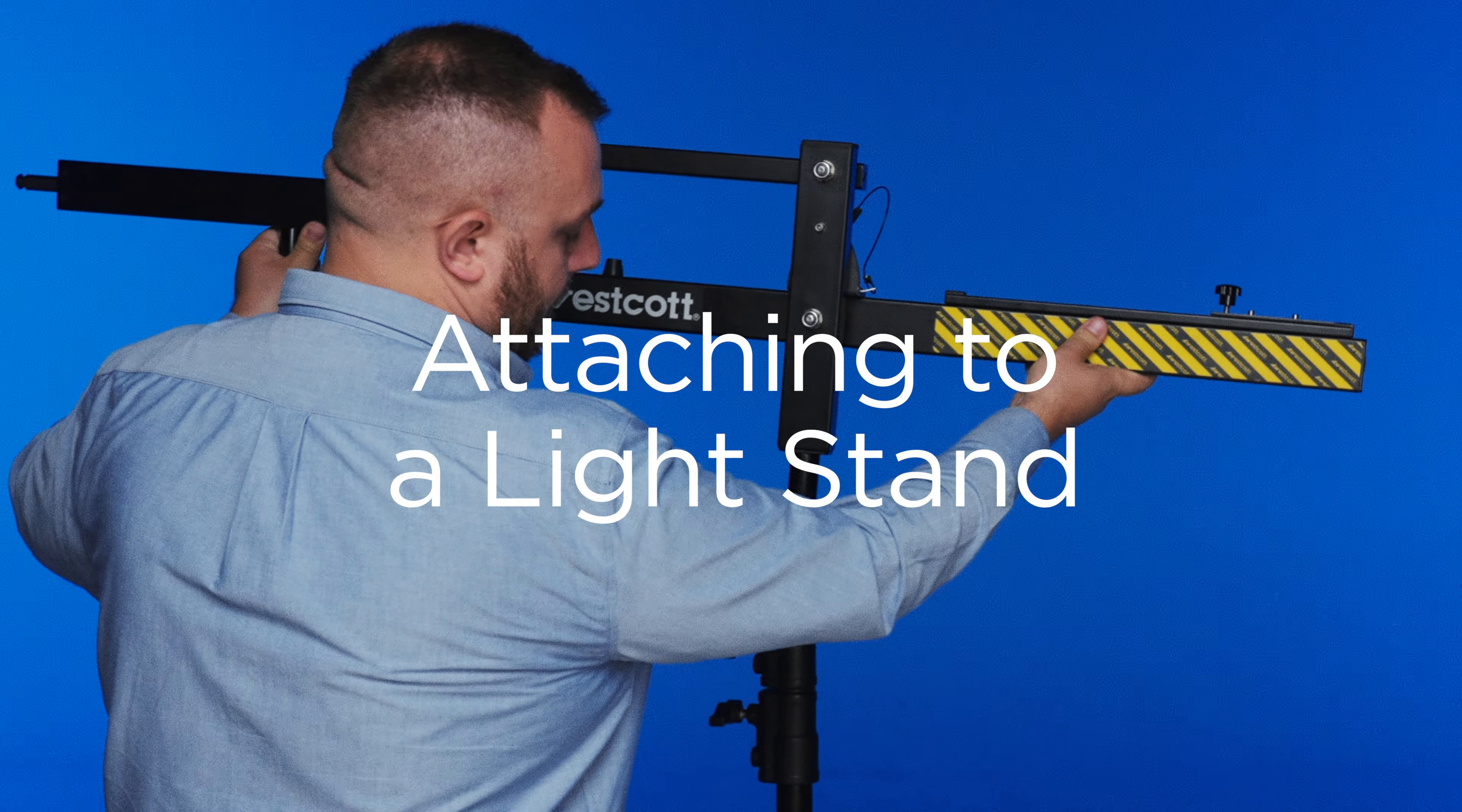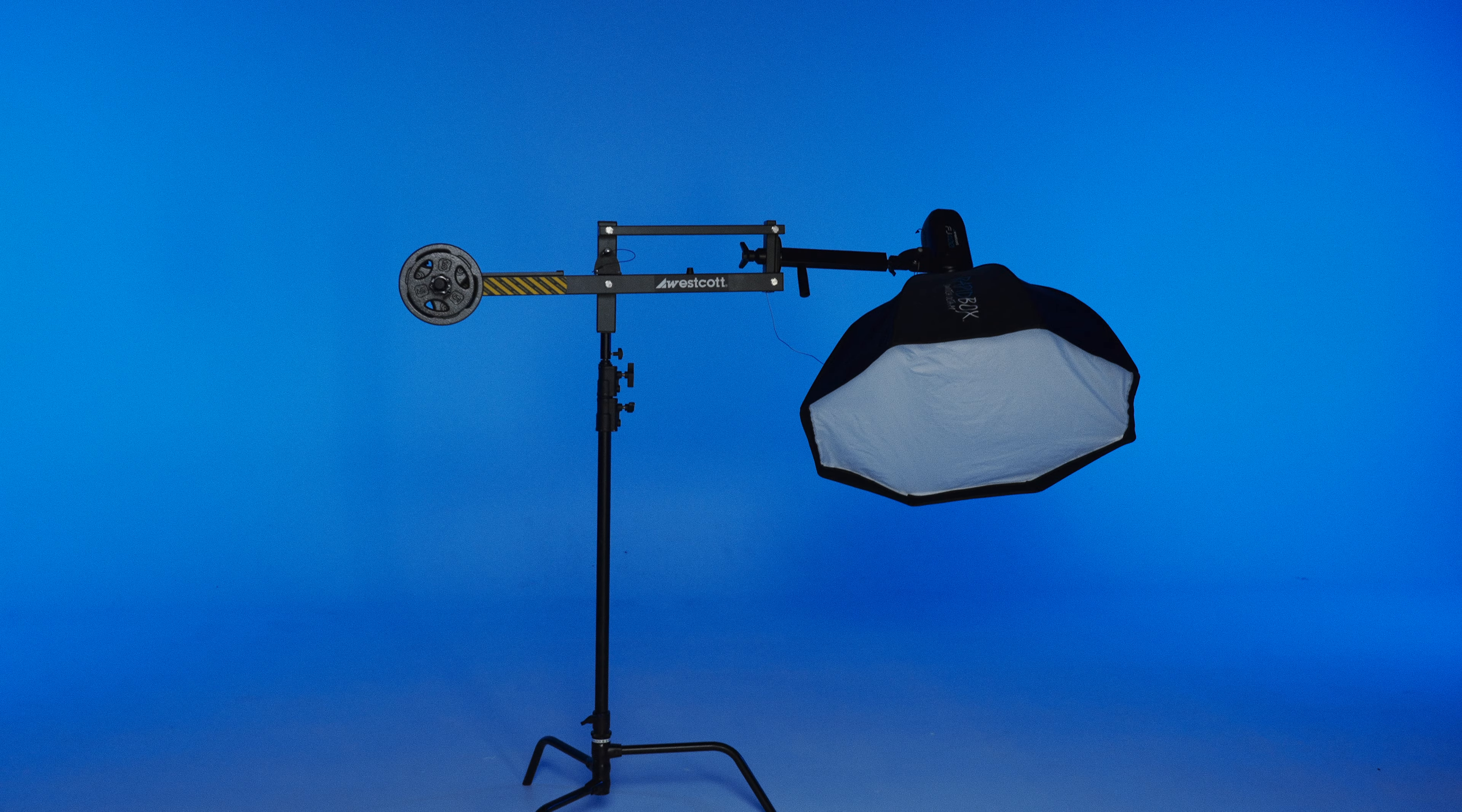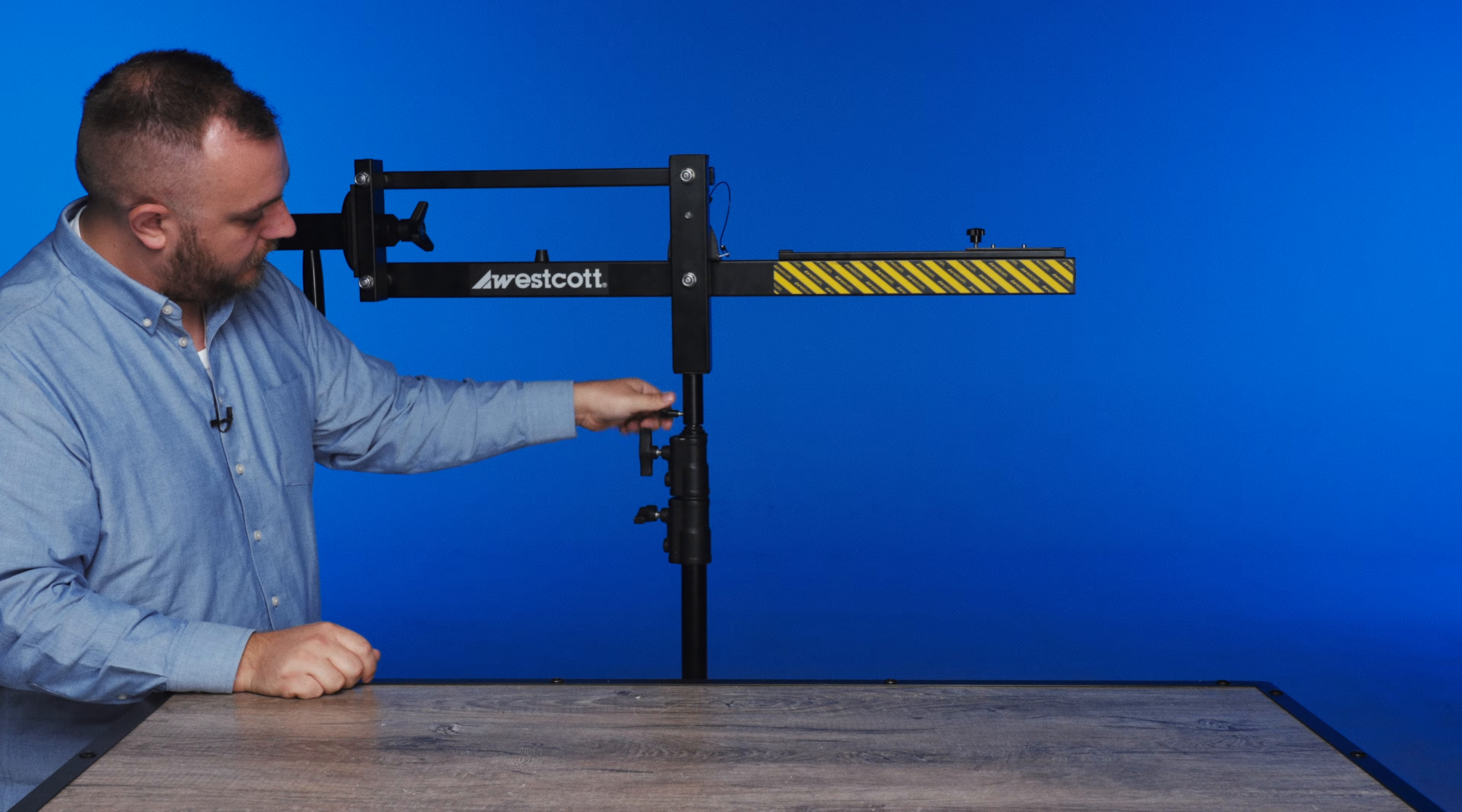Remove all equipment and counterweights from the EZBoom. Align its receiver with the C-stand's baby pin and lower it into place, ensuring the extension arm is positioned over the largest leg of the C-stand for increased stability. With the EZBoom in the horizontal position, tighten the tension knob to ensure it's securely attached to the C-stand.